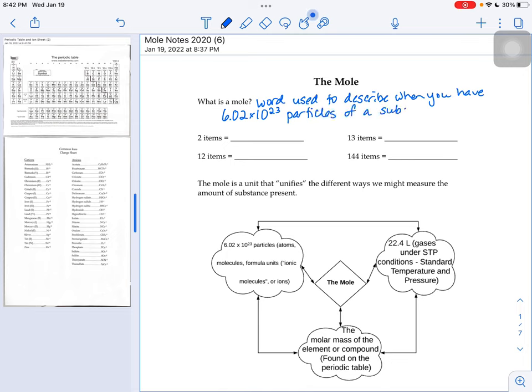It's a word that refers to a number, 6.02 times 10 to the 23rd.